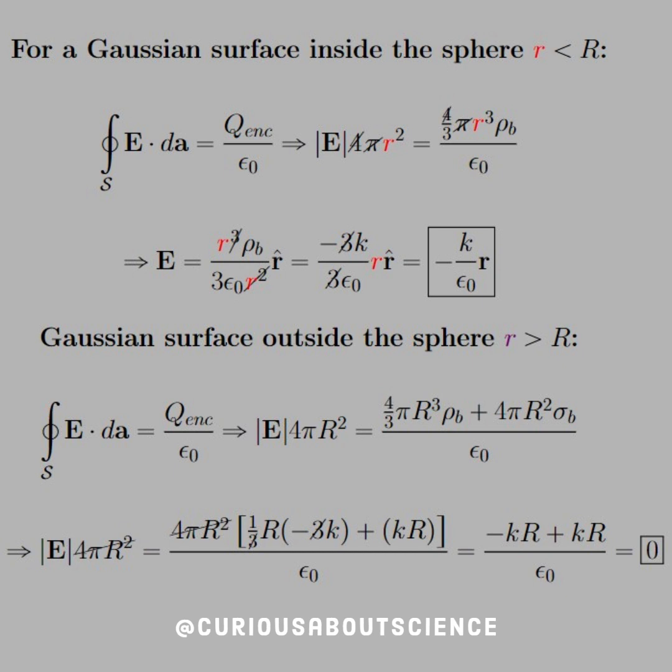The 4 pi cancels on both sides. As you see in the line below, the radii ended up canceling, and we're left with an expression with the volume bound charge that we just found. So we substitute that in, and we see that the 3s cancel. Note that the red r and the r hat form the spatial vector r. So in total, we're left with negative k over epsilon naught r for the e field inside.